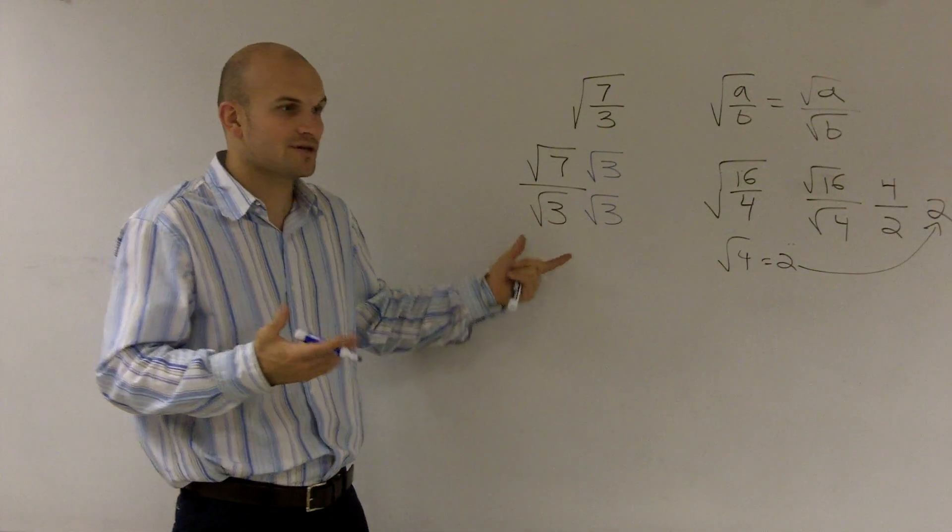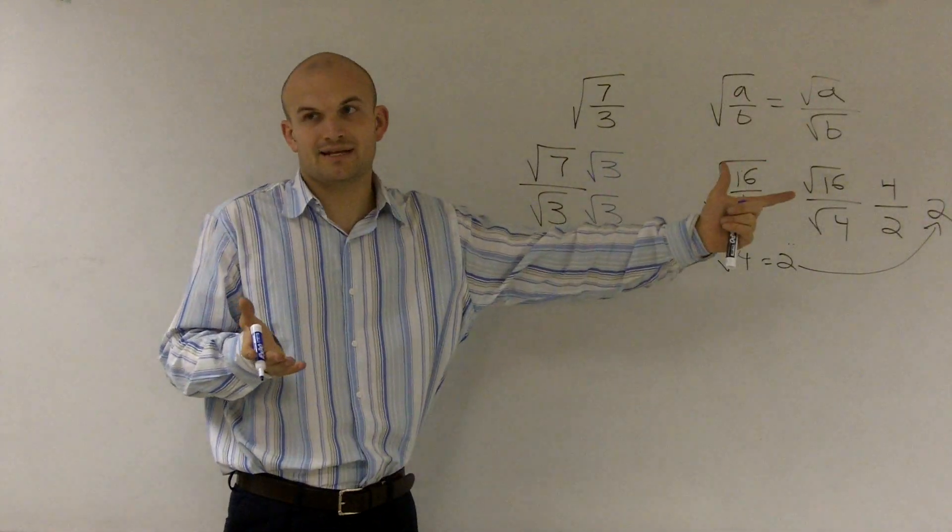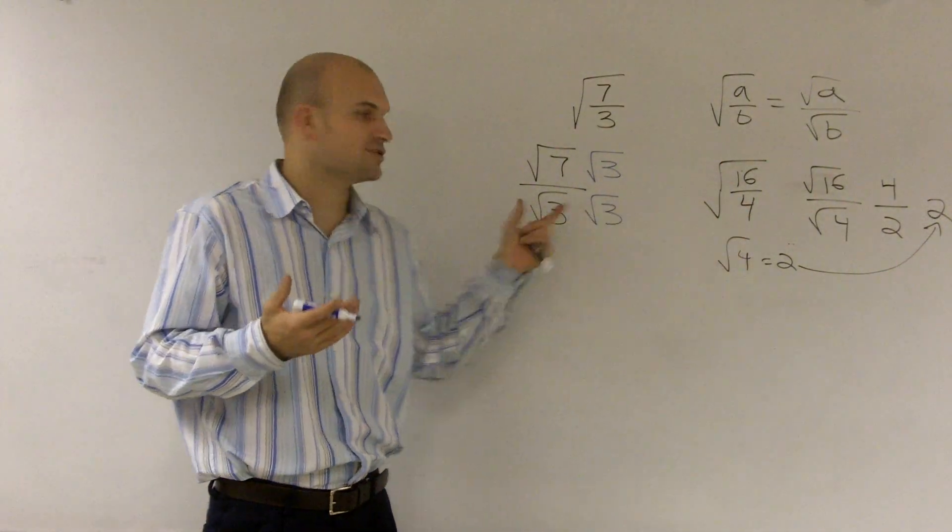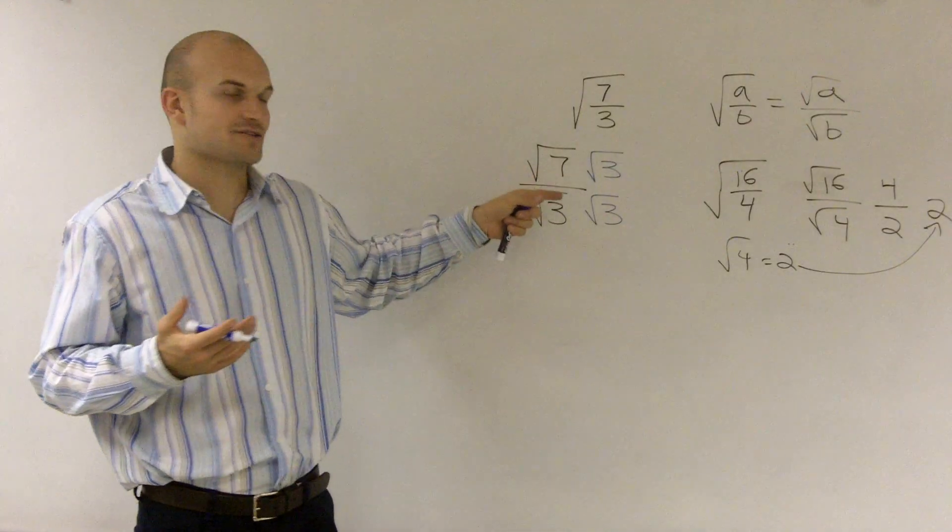The square root of 3 is an irrational number, so it goes on forever, meaning we can't divide a number that goes on forever into a rational number.